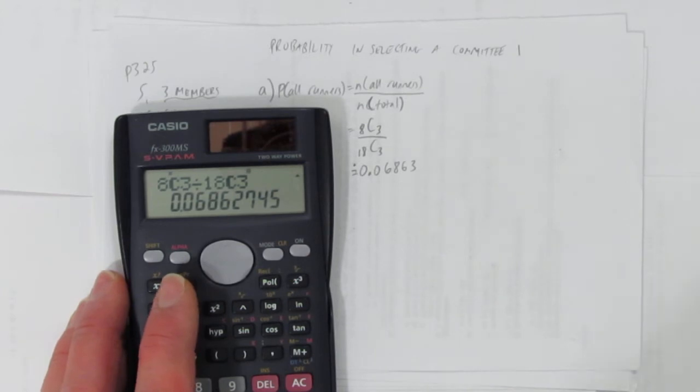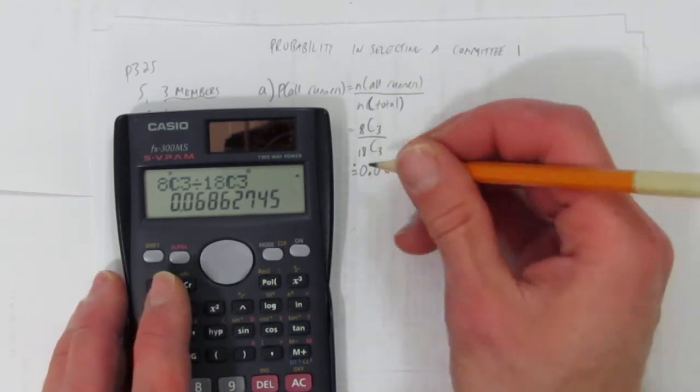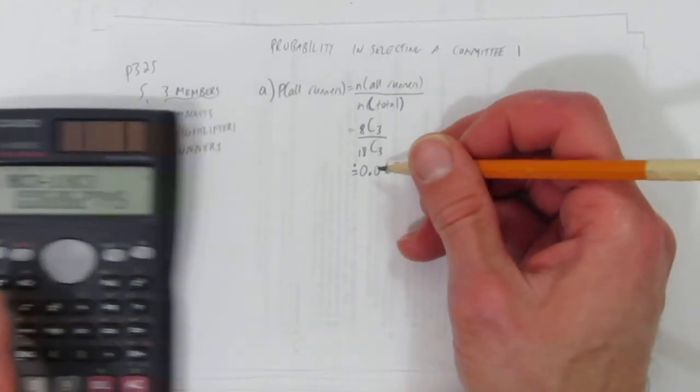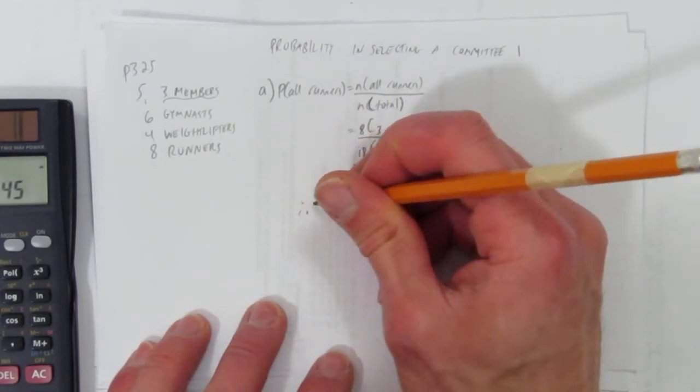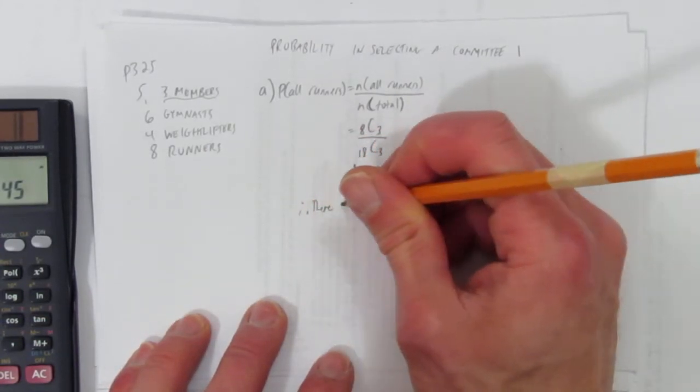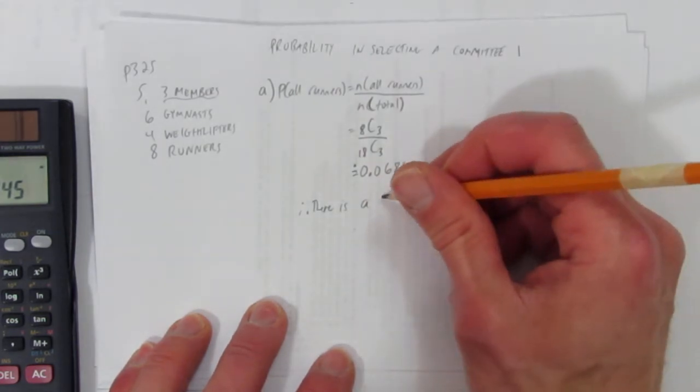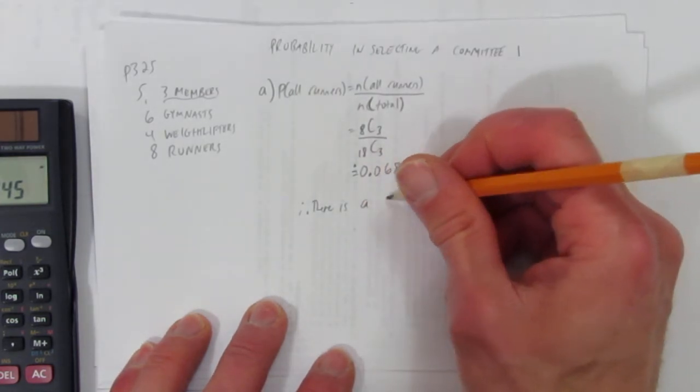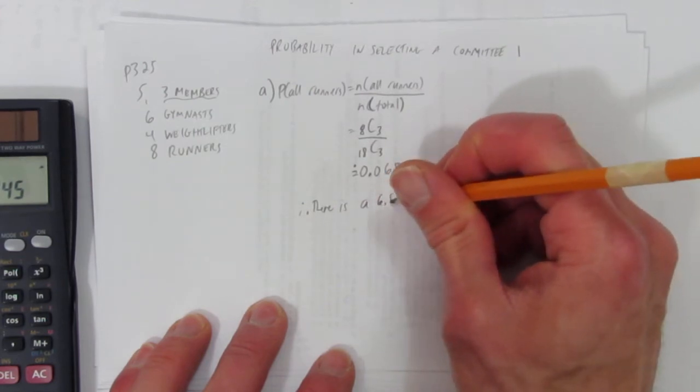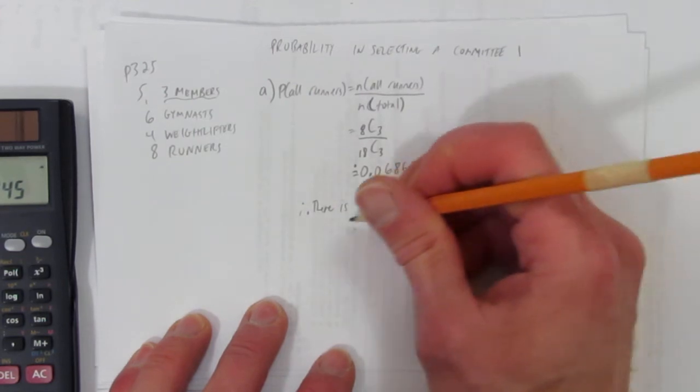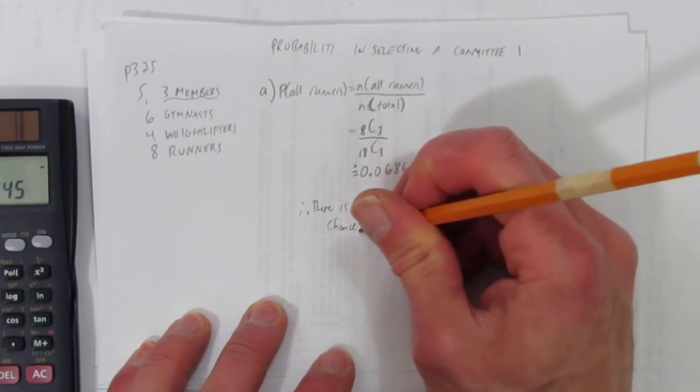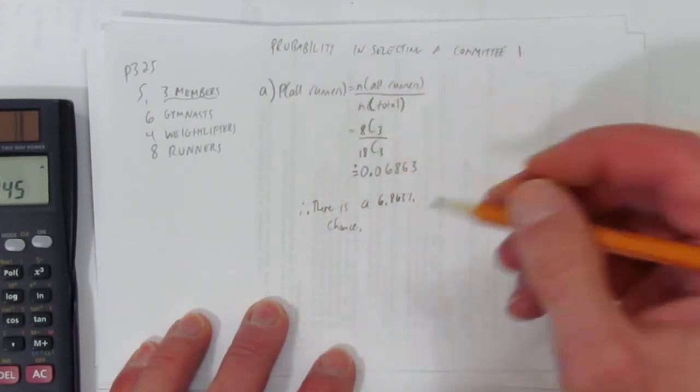And so, looking at that question, we're actually done, that's part A. Therefore, there is a, you can write it as a decimal or as a percent, move it two spaces, and you get a 6.863 percent chance of having all runners be on the committee.